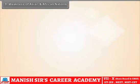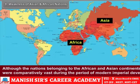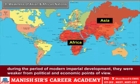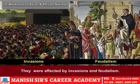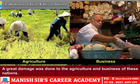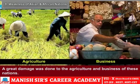Eighth, weakness of Asian and African nations: Although the nations belonging to the African and Asian continents were comparatively vast during the period of modern imperial development, they were weaker from a political and economic point of view. They were affected by invasions and feudalism. A great damage was done to the agriculture and business of these nations. The societies were also divided by religions, cults, languages, etc. The European nations, being scientifically stronger, took full advantage of the limitations of these nations in the African and Asian continents and brought them under their imperial reign.